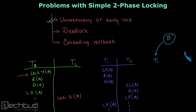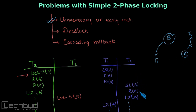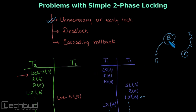In between, transaction T2 starts and requests a shared lock on data item A, which is granted. T2 performs a read on A. Then T2 requests an exclusive lock on data item B. This request will not be granted because B is already exclusively locked by T1, so T2 must wait.